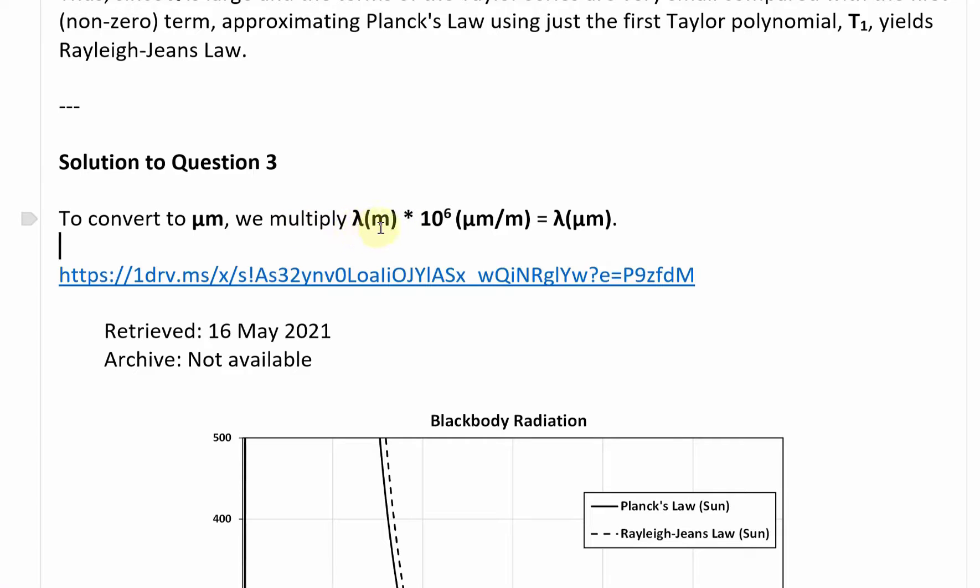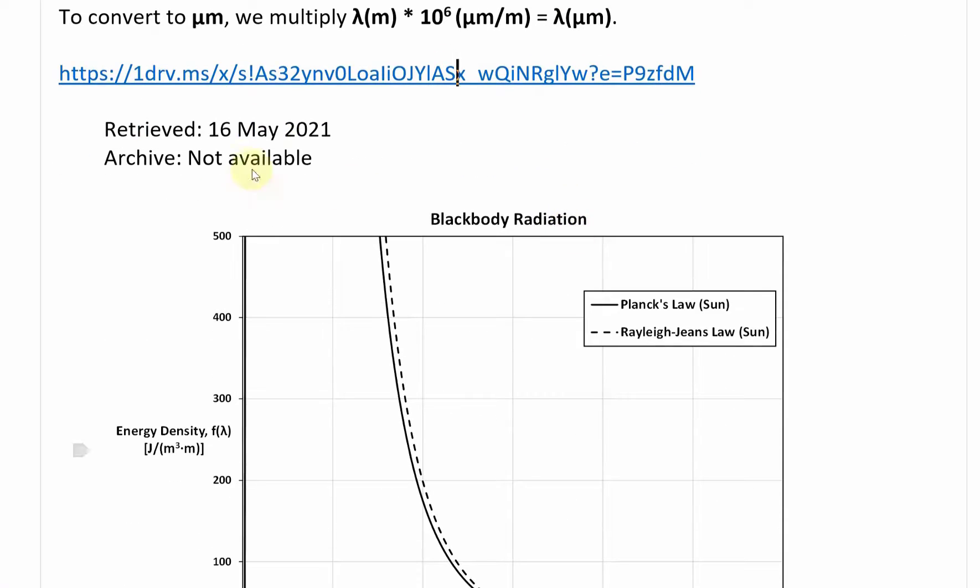We multiply lambda in meters times 10 to the 6, which is micrometers divided by meters, and then we get equals to lambda in micrometers. You could just use basic units and those cancel, and we're just left with this one here.